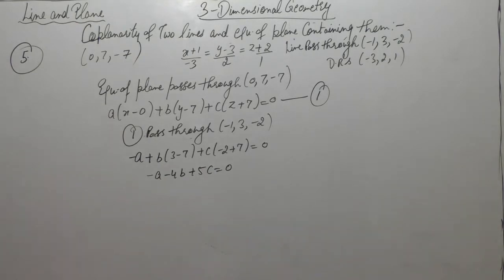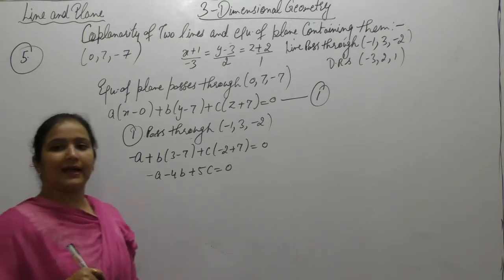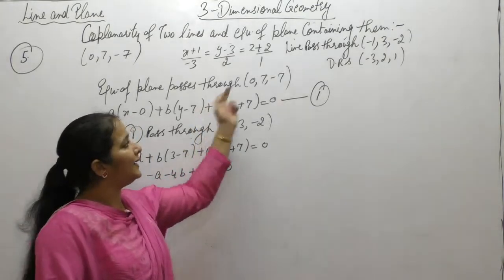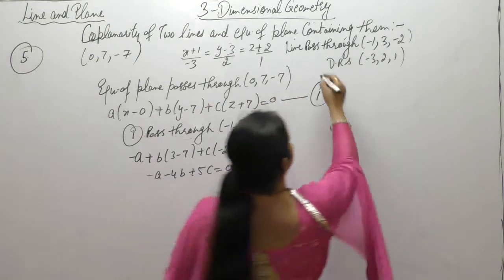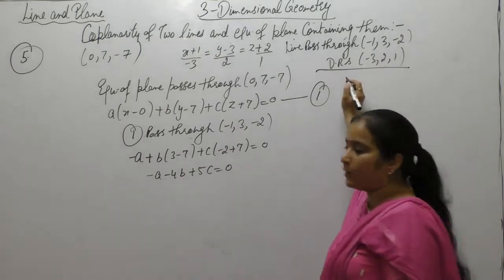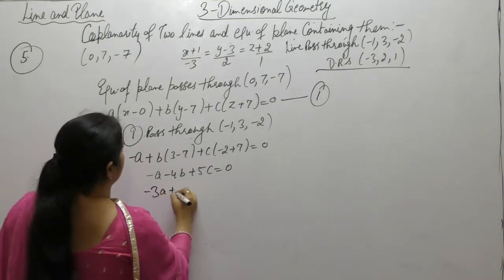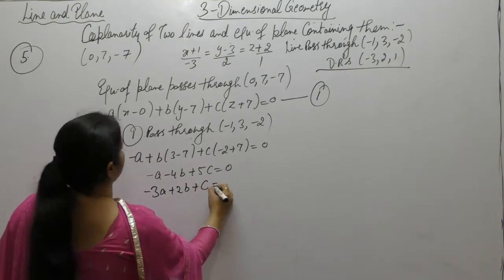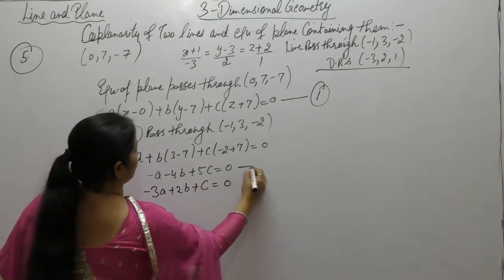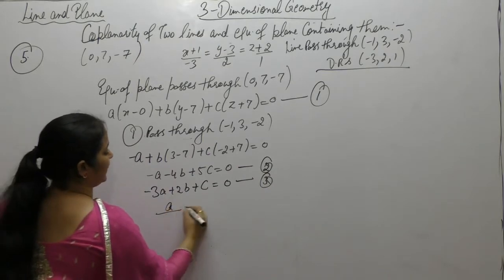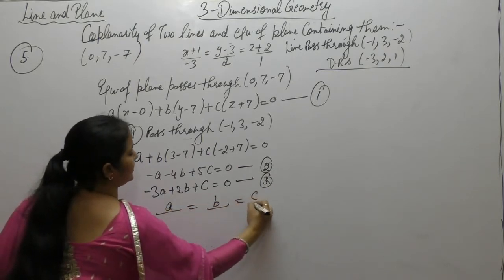The plane must also be parallel to the line. If the plane is parallel to the line, it means the normal of the plane and the direction ratios of the line will be perpendicular. So minus 3 into a, plus 2 into b, plus 1 into c equals 0. Now we have these two equations; solve them to find the values of a, b, and c.